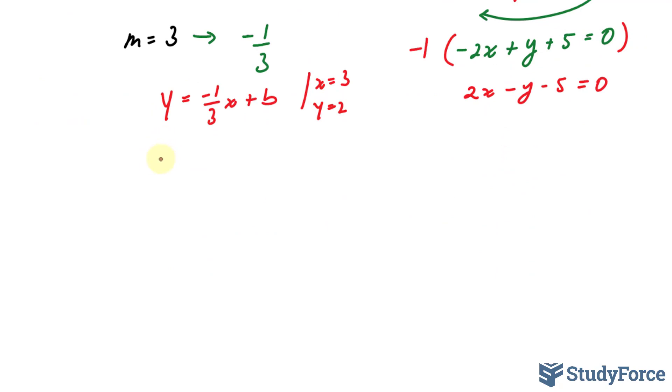Substituting this 2 into here, 2 equals negative 1 over 3 times 3 plus b. Luckily these 3s cancel out, leaving us with 2 equals negative 1 plus b. Bringing that over, 2 plus 1 equals b, and that equals 3. Therefore our equation will be y equals negative 1 over 3 x plus 3.